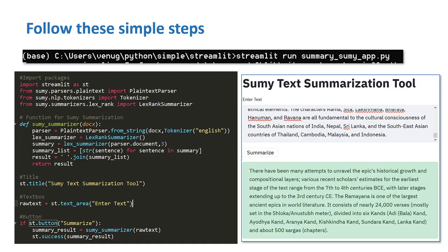After the user pastes or types their text in the text box, we create a button named Summarize. Whenever the user clicks on this Summarize button, it will call the function sumy_summarizer, pass our text to it, get the summary, and then display it to the user. So this Summarize button basically calls the function and gets the result.